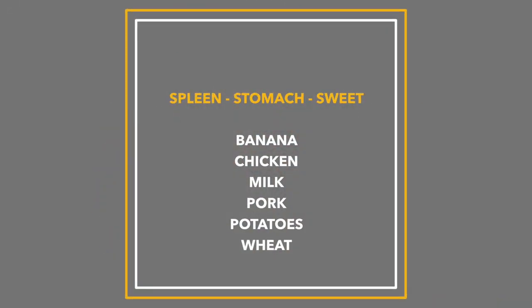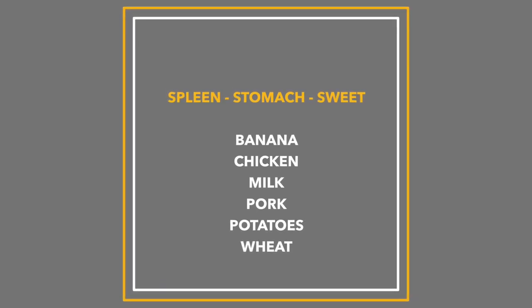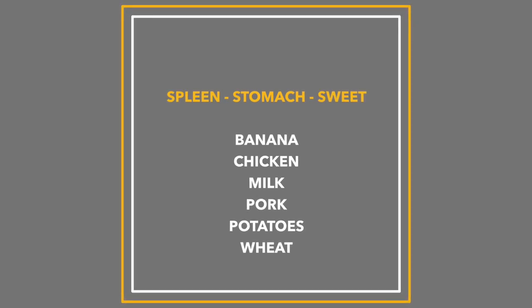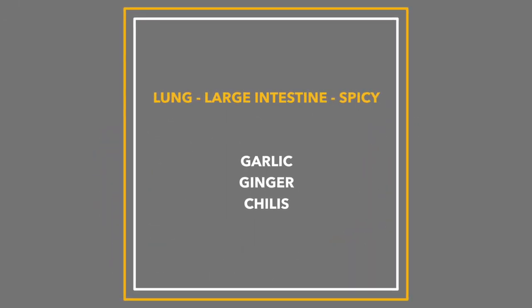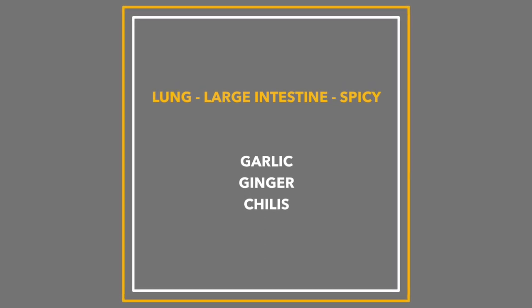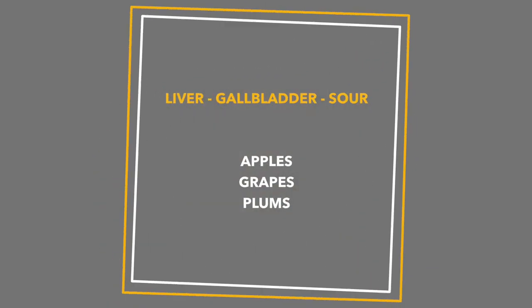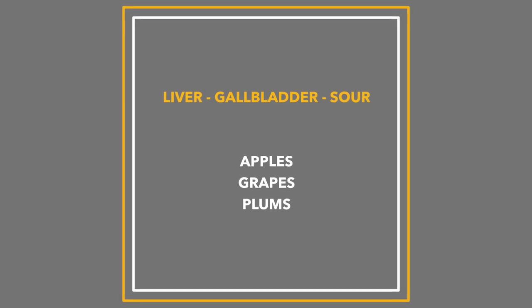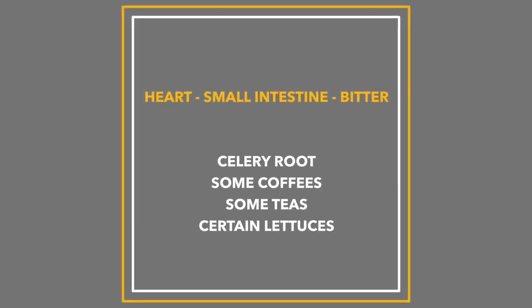When we associate certain flavors and foods with certain organ systems, it looks like this: the spleen and stomach are associated with sweet, and with foods like bananas, chicken, milk, pork, potatoes, and wheat. The lung and large intestine are associated with spicy or acrid — garlic, ginger, or chilies. The kidney and bladder are associated with salty — salt, crayfish, or oysters. The liver and gallbladder are associated with sour — apples, grapes, plum, and some cheeses. The heart and small intestine are associated with bitter — celery root, coffee, some tea, and some lettuces.